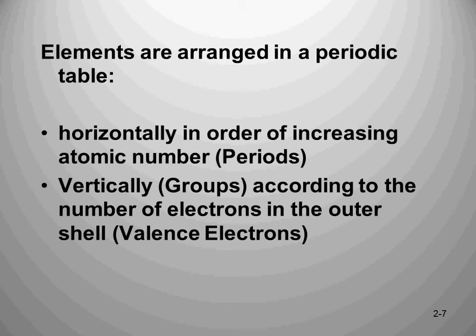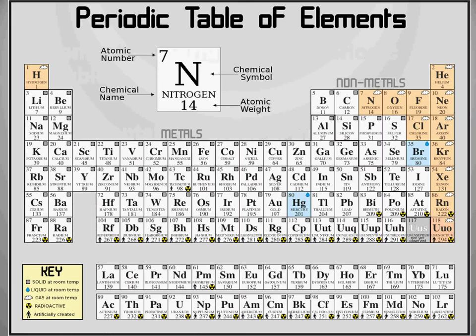The horizontal order of the periodic table — so lithium, beryllium, boron, carbon, nitrogen, oxygen, fluorine, and neon — this entire horizontal row is called a period. The vertical column, such as hydrogen, lithium, sodium, and potassium, are all part of a group.